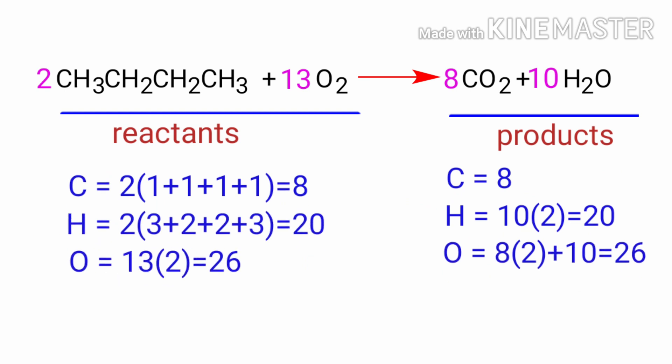The equation is now balanced. There are 8 Carbon Atoms, 20 Hydrogen Atoms, and 26 Oxygen Atoms on both sides.